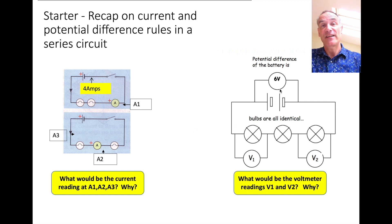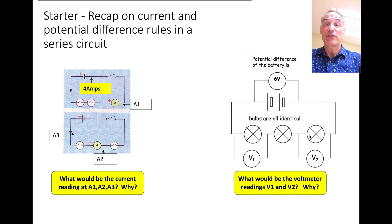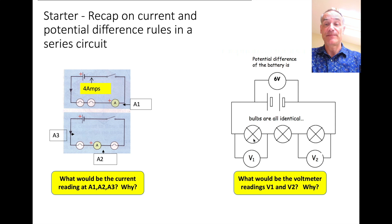In a series circuit, the voltage is shared, and if it's identical bulbs, the voltage is shared equally because the energy is shared equally. So of course you'll have 2 volts here, 2 volts here, and 2 volts here.